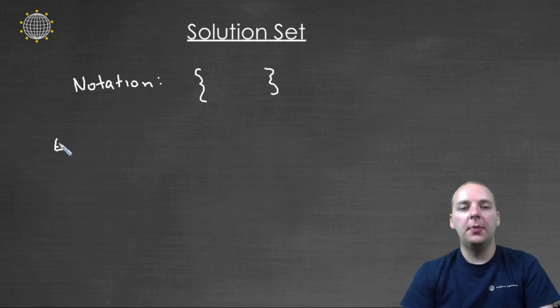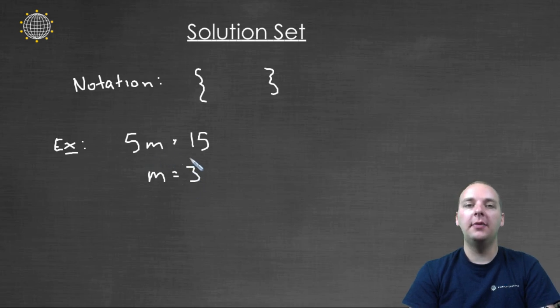So for example, let's say if you had the equation 5m equals 15. Well, the solution obviously is m equals 3, because 3 times 5 is 15. But how do we write this as a solution set?